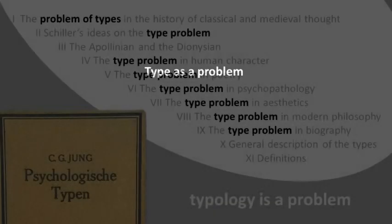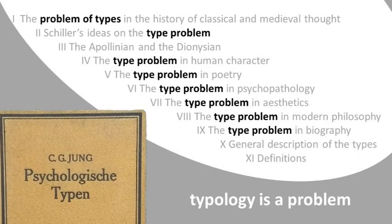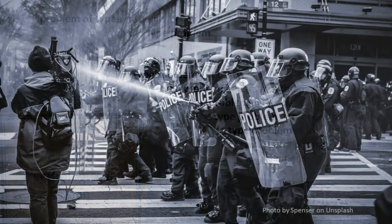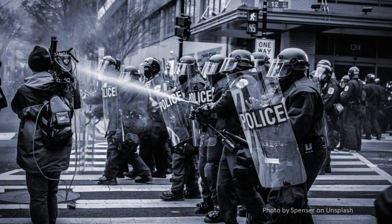The phrase 'type problem' describes a state when one or more functions become so developed that they repress their opposites — they become one-sided. A little bit of one-sidedness is not a problem and can bring us success; if we are one-sided, we have developed a specialism that is valued by society. But if we become too one-sided, it can create problems. This not only happens with psychological functions but with any other form of attitude. If we have a one-sided political or religious attitude, it can lead to social unrest, conflict, and war, because we have a distorted experience of the opposite and lose sight of its value.